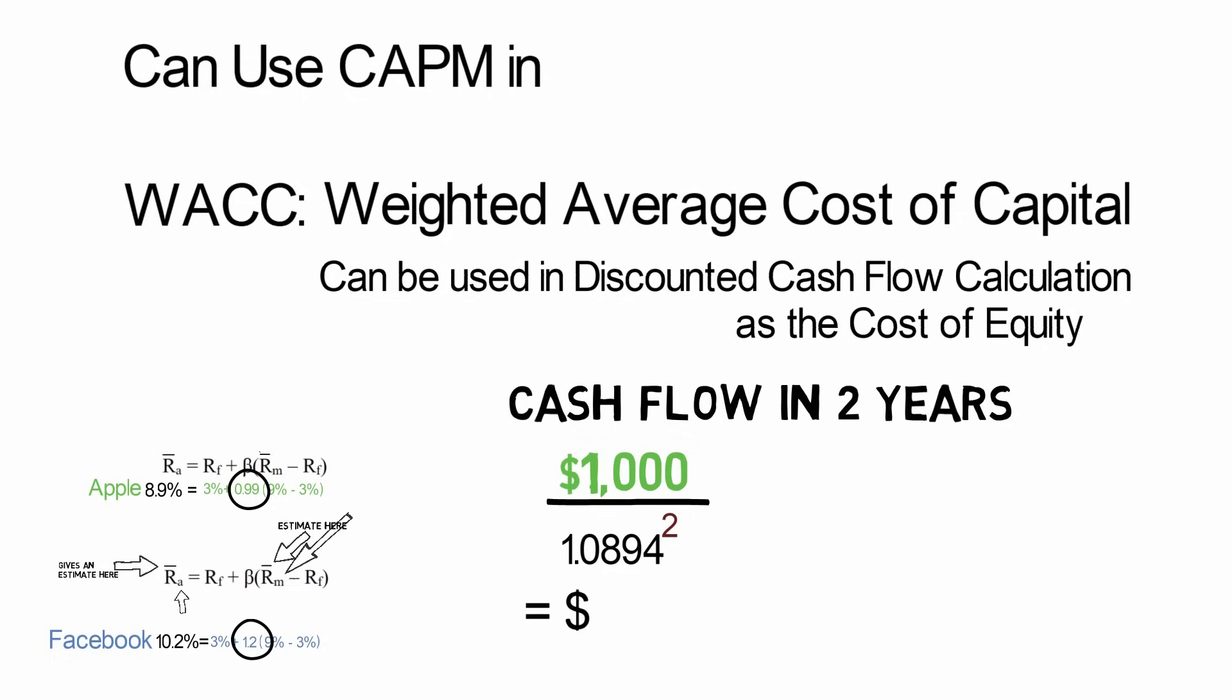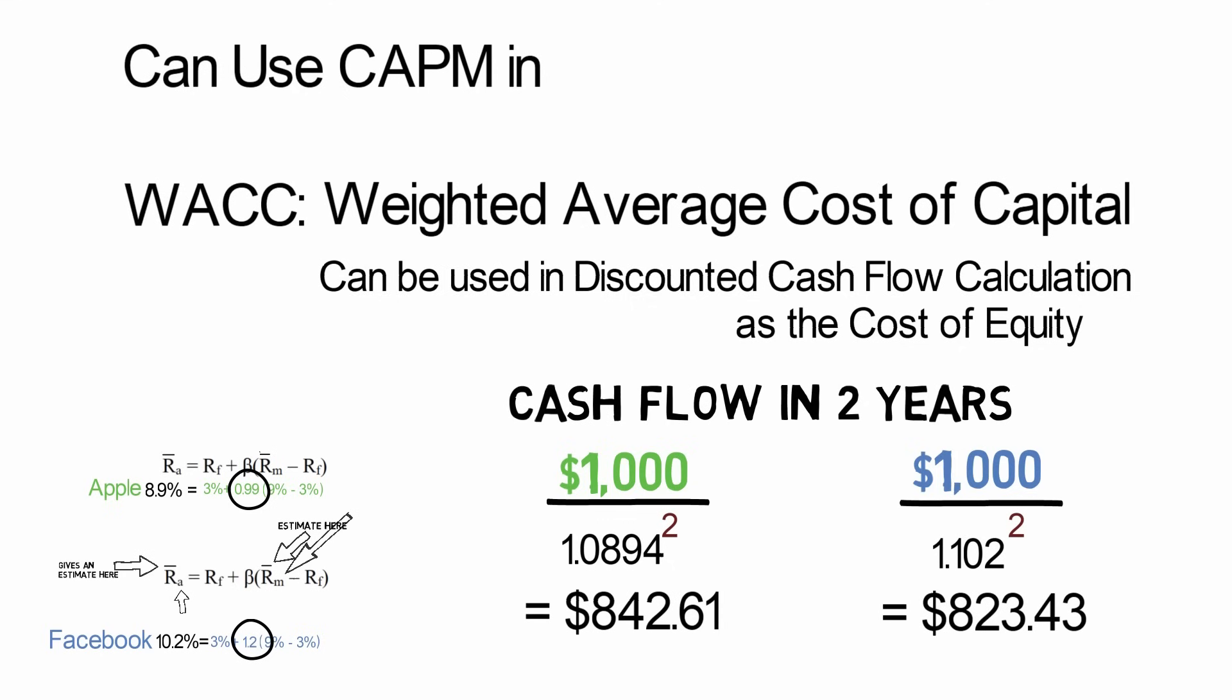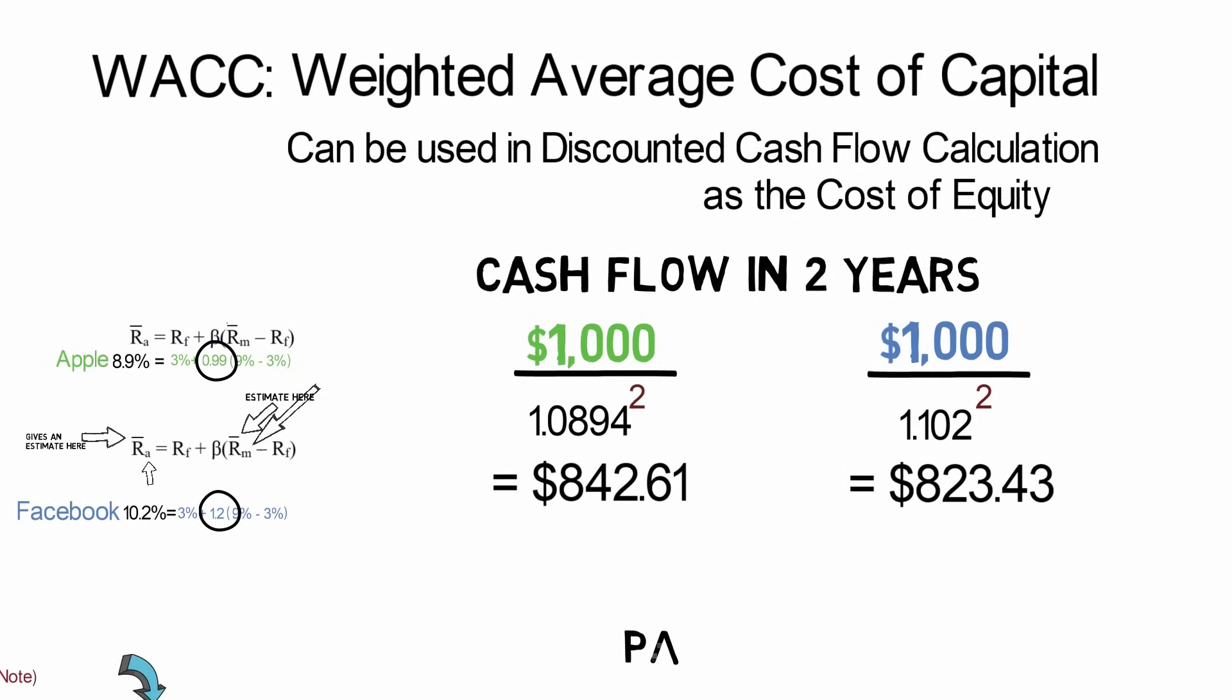And we can see that that $1,000 in two years is worth $842.61 today. For Facebook, if we were also expecting $1,000 in two years, that would be worth $823.43 today. So in theory, that's the present value of your future cash flow expectations.